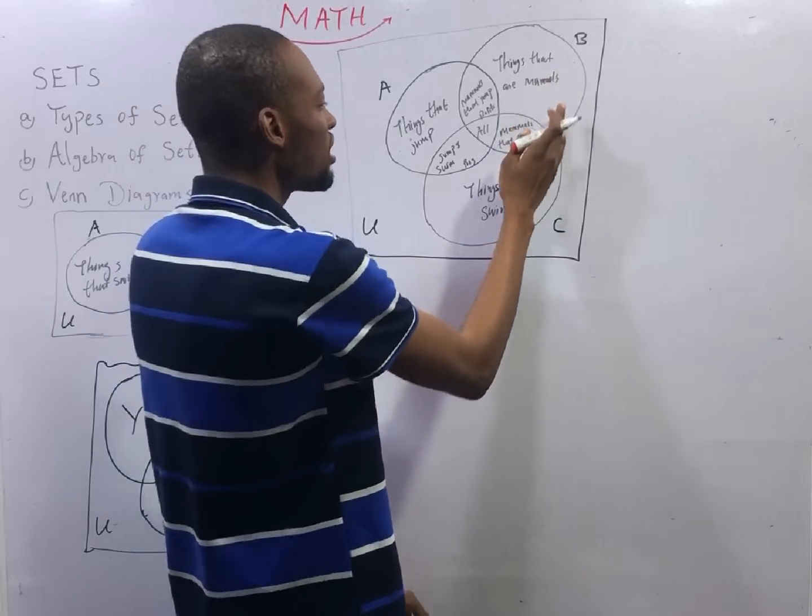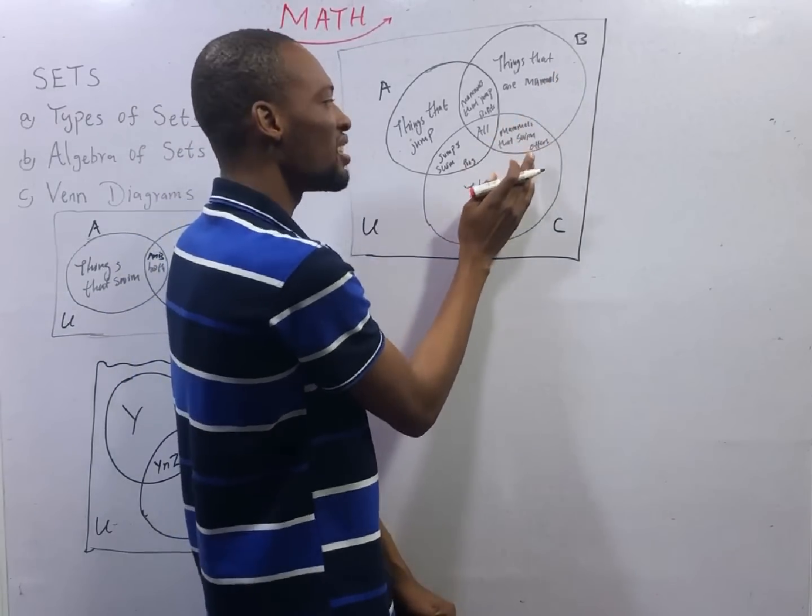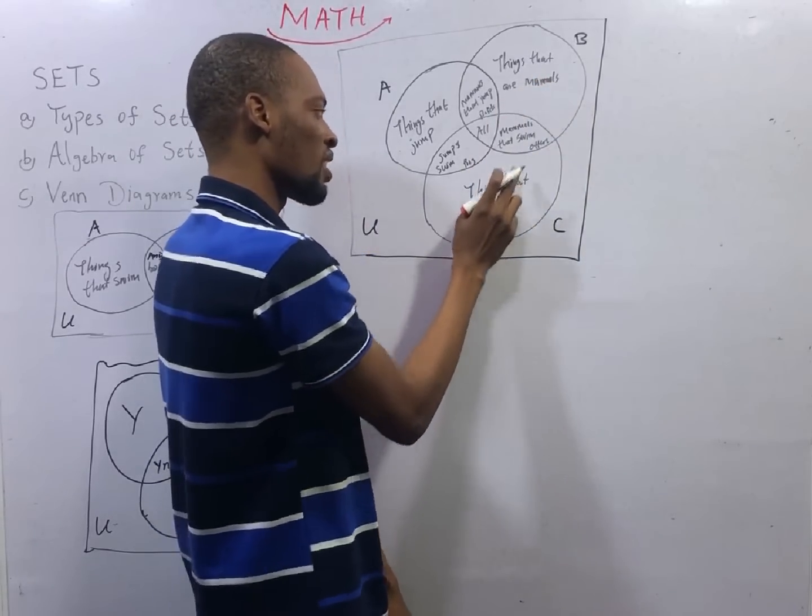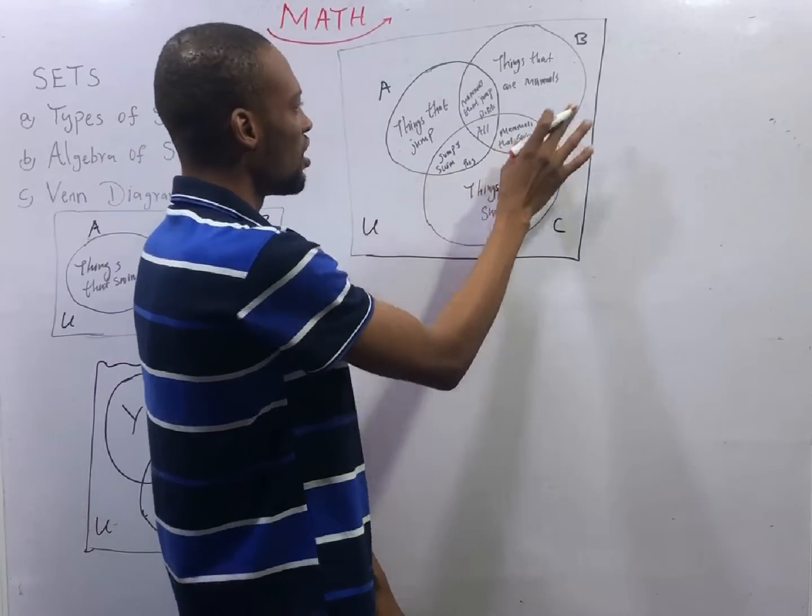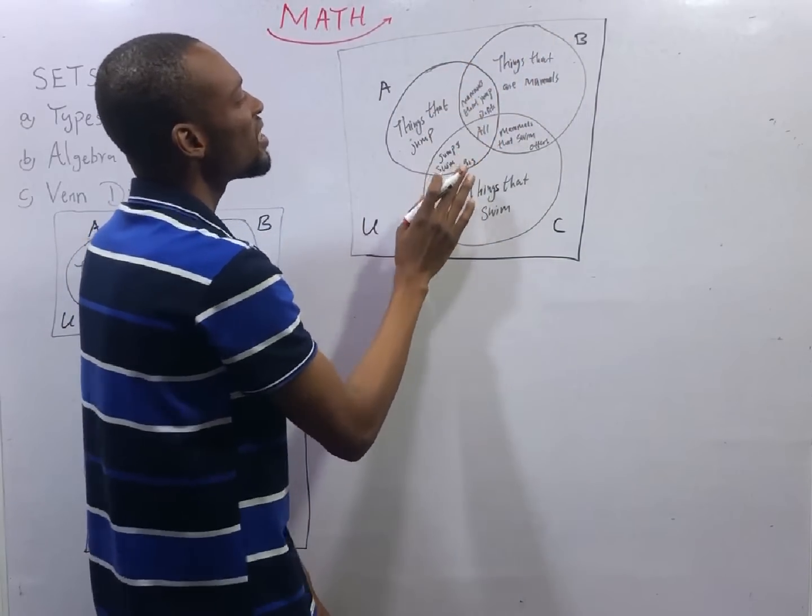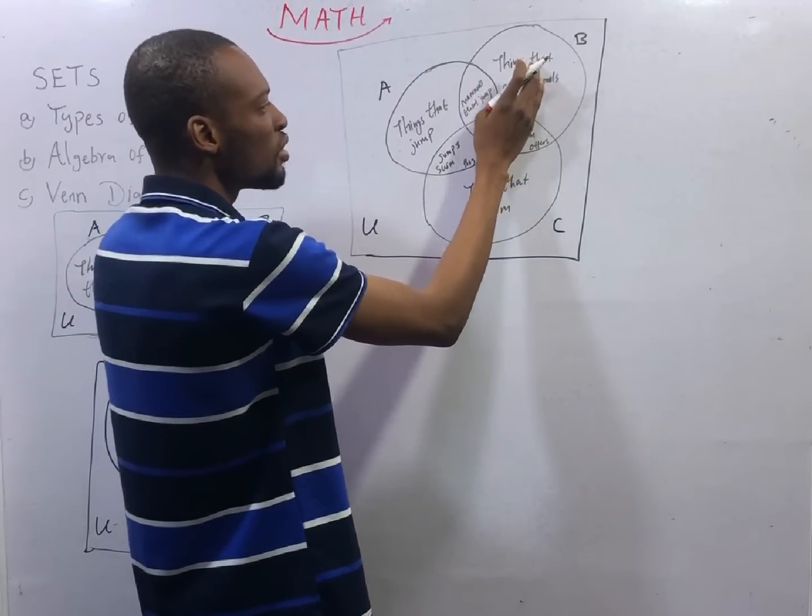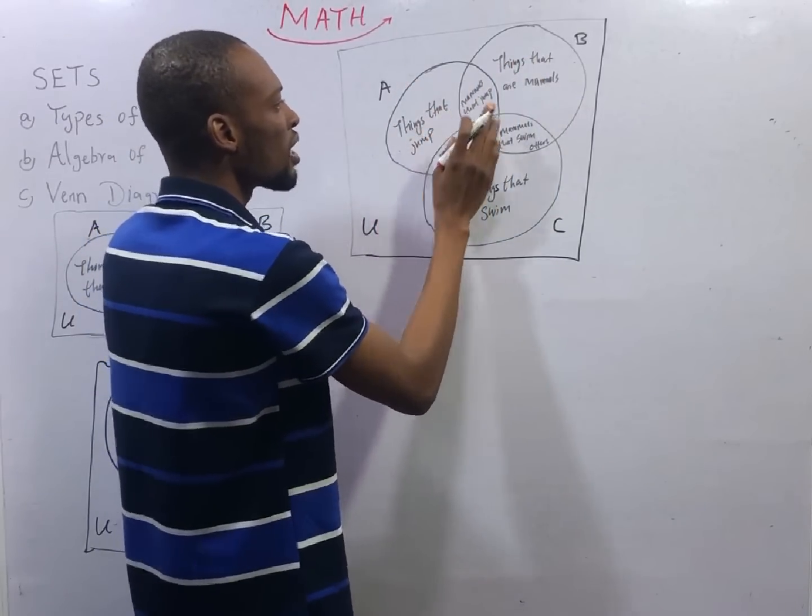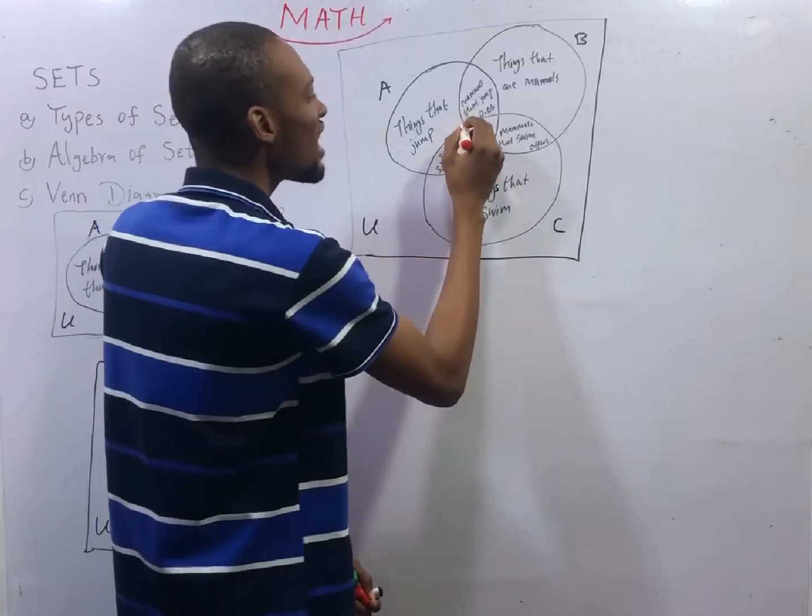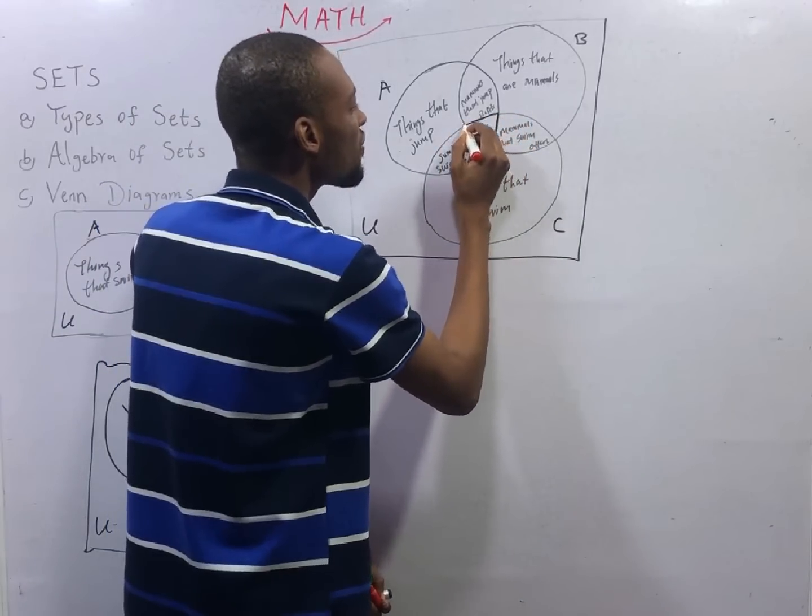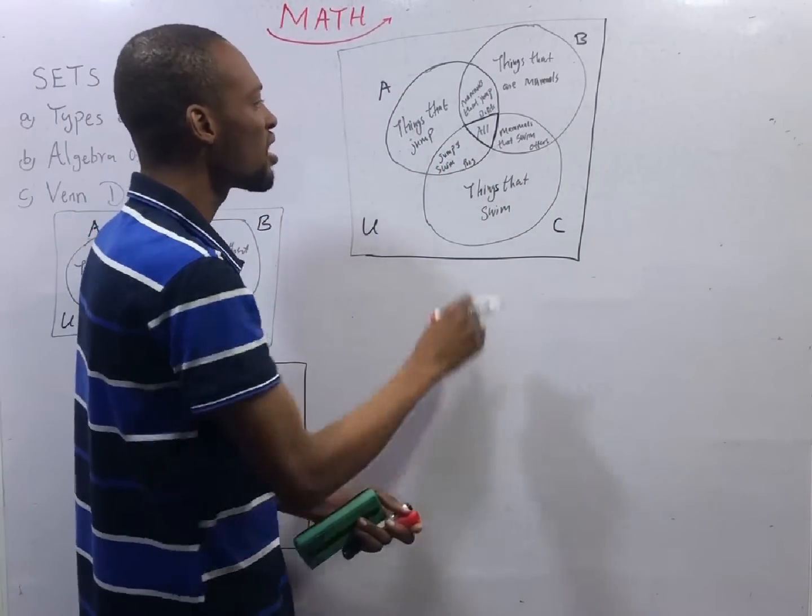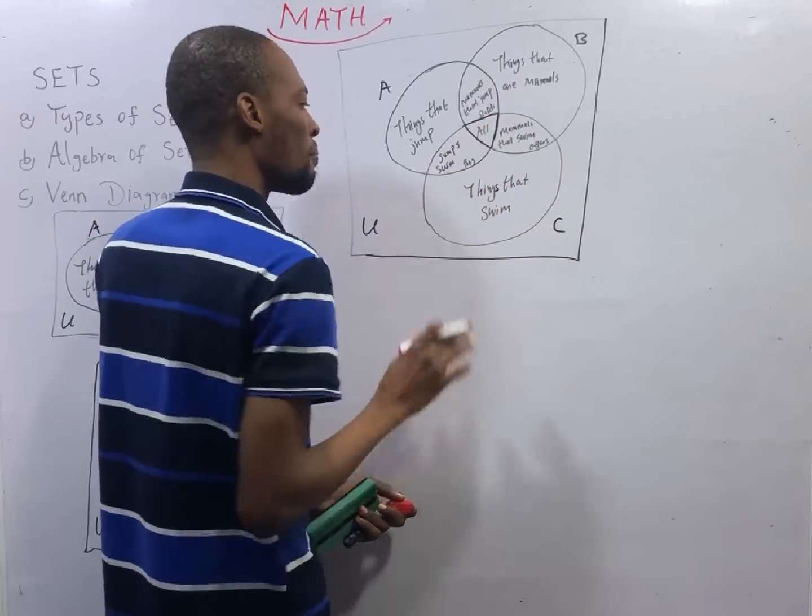If B and C, this part of B and C represents things that are mammals and also swim. The part between A and B represents things that jump and are also mammals. We can say rabbits. This last part, the central part, represents things that have all the characters, that do everything. So it will represent things that jump, things that swim, and things that are mammals.